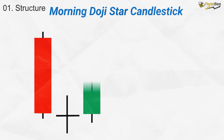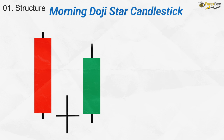Now let's talk about the morning doji star candlestick pattern. This pattern consists of three candlesticks. The first candle is a large-bodied bearish candle indicating strong selling pressure. The second candle is a doji candle, which represents indecision in the market as buyers and sellers are nearly equal in strength. The third candle is a large-bodied bullish candle signaling a potential reversal, with buyers taking control. A critical condition to confirm this pattern is that the closing price of the third bullish candle should be at least above 50% of the first bearish candle's body.